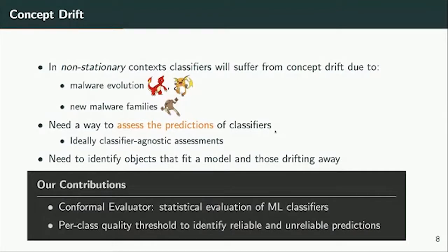In terms of contribution, we propose Conformal Evaluator as a statistical evaluation framework for machine learning classifiers. The framework provides quality metrics for machine learning classification tasks that is agnostic to the underlying algorithm, as long as the machine learning process produces a score — the distance from a hyperplane in SVM, the distance from a centroid, a probability from random forests or deep learning with a softmax layer, and so forth. We then turn the problem into an optimization problem to identify a suitable threshold that enables us to tell whether a prediction is likely reliable or not, and if not, we suggest not trusting the classifier.